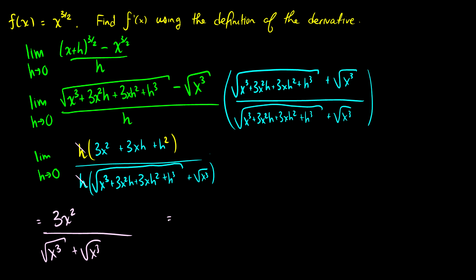So we're left with 3x squared over 2x to the three halves. Doing some simplification, we get three halves times x to the one half. We've solved it, and we know that the derivative of x to the three halves is three halves x to the one half — this is just the power rule.